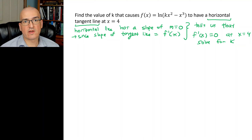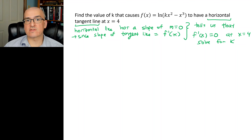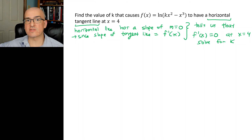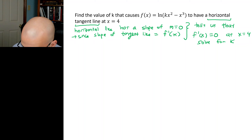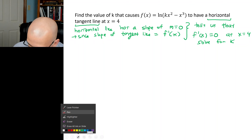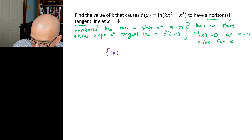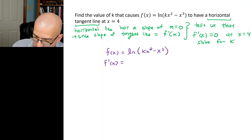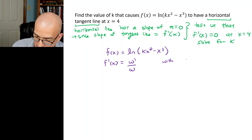We're told the x value this happens at (x = 4), and we need to find what k has to be for that to happen. So let's take the derivative. f(x) = ln(kx² − x³). We take the derivative using the w'/w rule, where w = kx² − x³, and k is a constant.